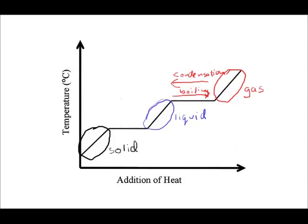One more time, let's change colors here and look at this direction right here. If we're moving from solid to liquid, we are talking about the process of melting. If we're going the opposite direction, going from liquid to solid, we're talking about the process of freezing.